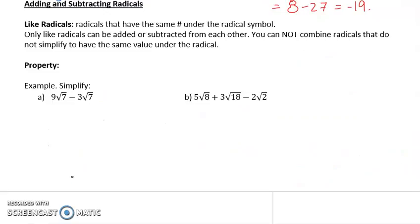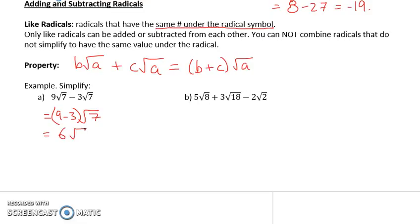Which leaves us with adding and subtracting radicals. First thing we need to note is like radicals are radicals that have the same number under the radical symbol. Only like radicals can be added or subtracted from each other. We cannot combine radicals that do not simplify to have the same value under the radical. Let's look at a couple of examples with the following property in mind. The property I want you to keep in mind is the fact that B times root A plus C times root A is equal to, I can add those coefficients together, B and C, times root A. So, 9 root 7 minus 3 root 7. I go 9 minus 3 root 7. It gives me 6 root 7.